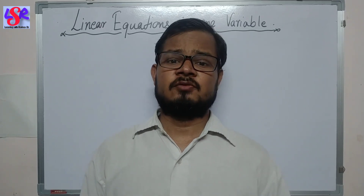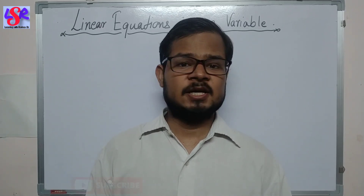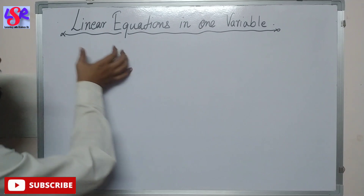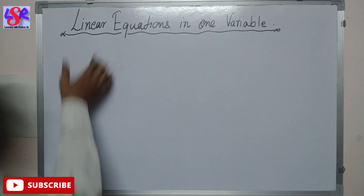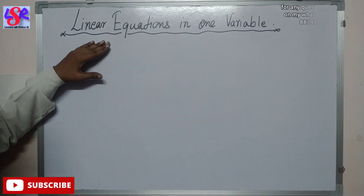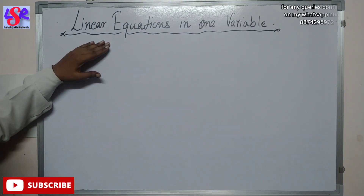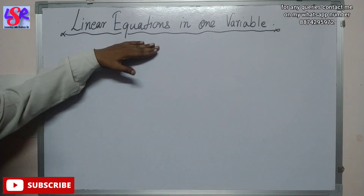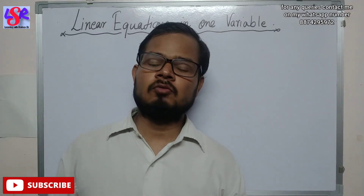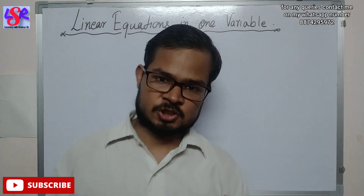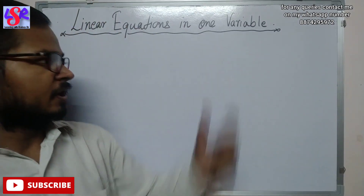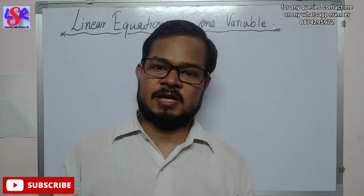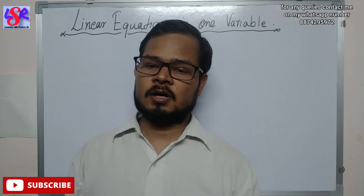Hello everyone. Here we are going to start with the chapter linear equation in one variable. In this chapter, linear means the equation will have a degree 1 — the highest power of the variable will be 1. Equation means we are going to equate two expressions with one variable, either x, y, or anything.